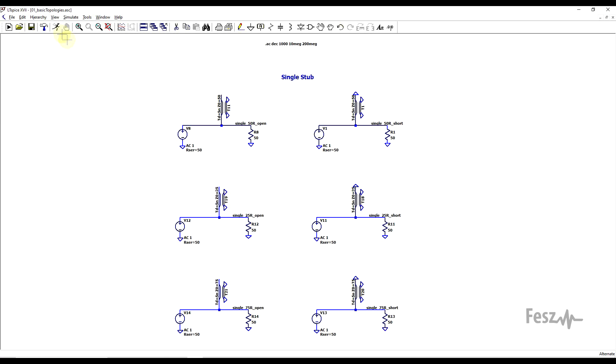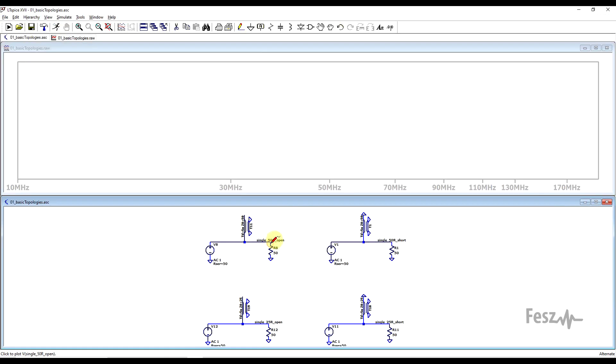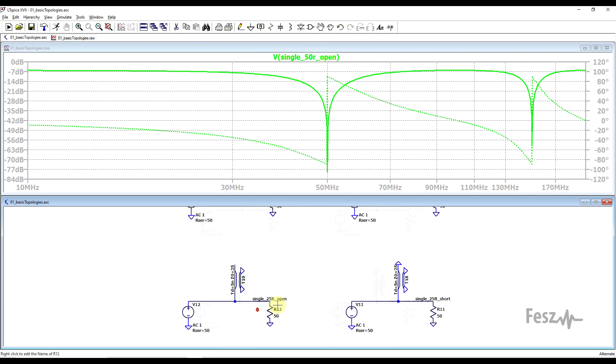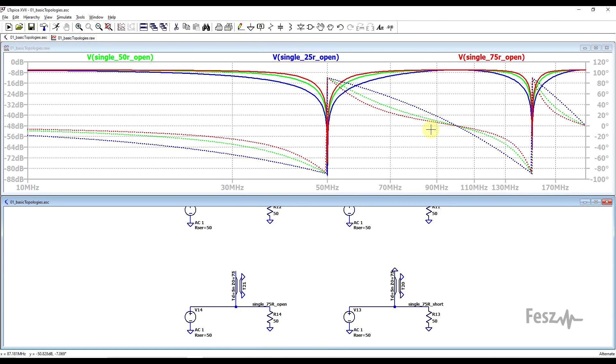So if we simulate this set of circuits and we only focus on the open-ended filters, we can observe that if the transmission line has a higher impedance, so in red we have the 75 ohm transmission line, the filter's response will end up being narrower. And if the transmission line's impedance is lower, so the 25 ohm version in blue, then the filter's response becomes wider.